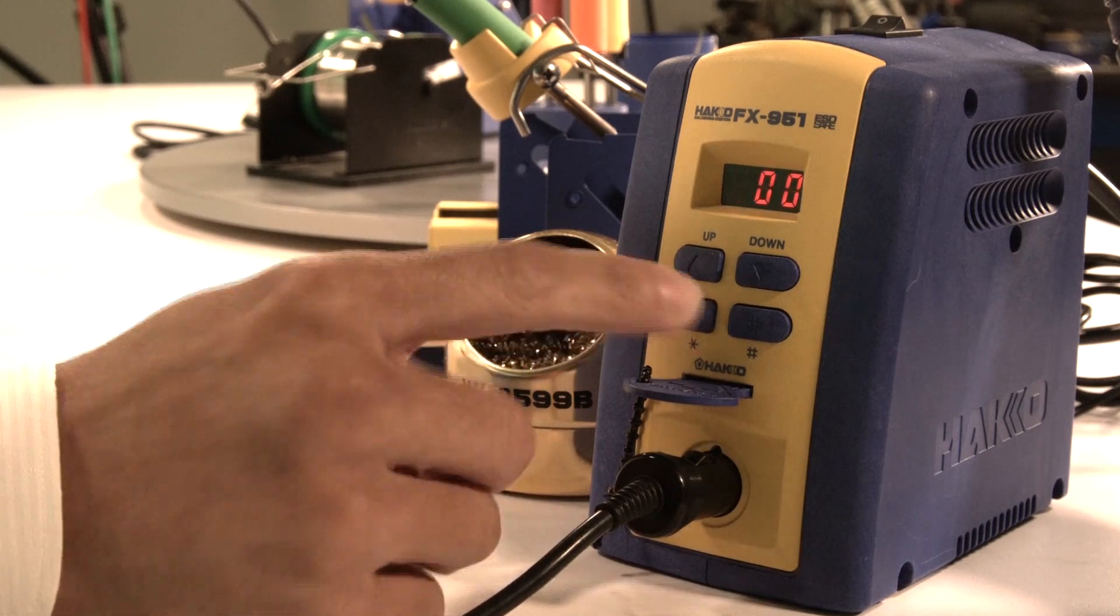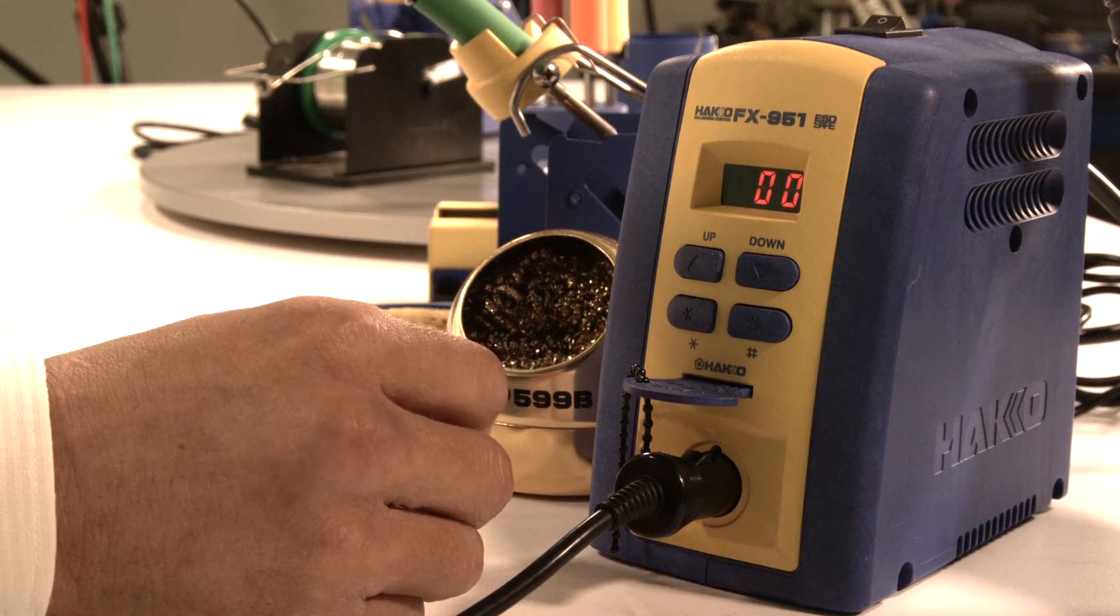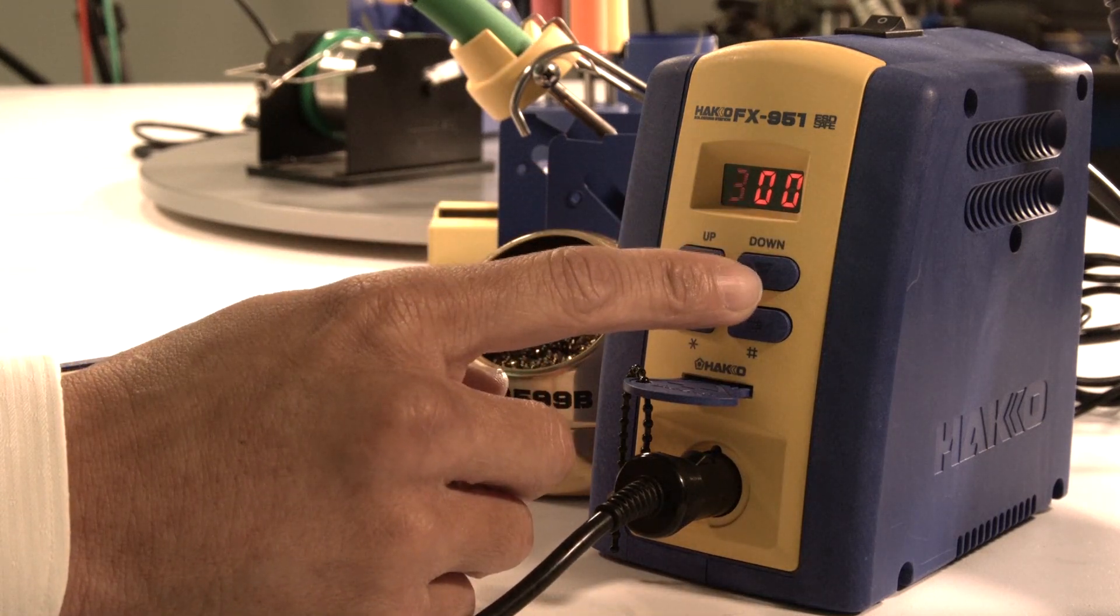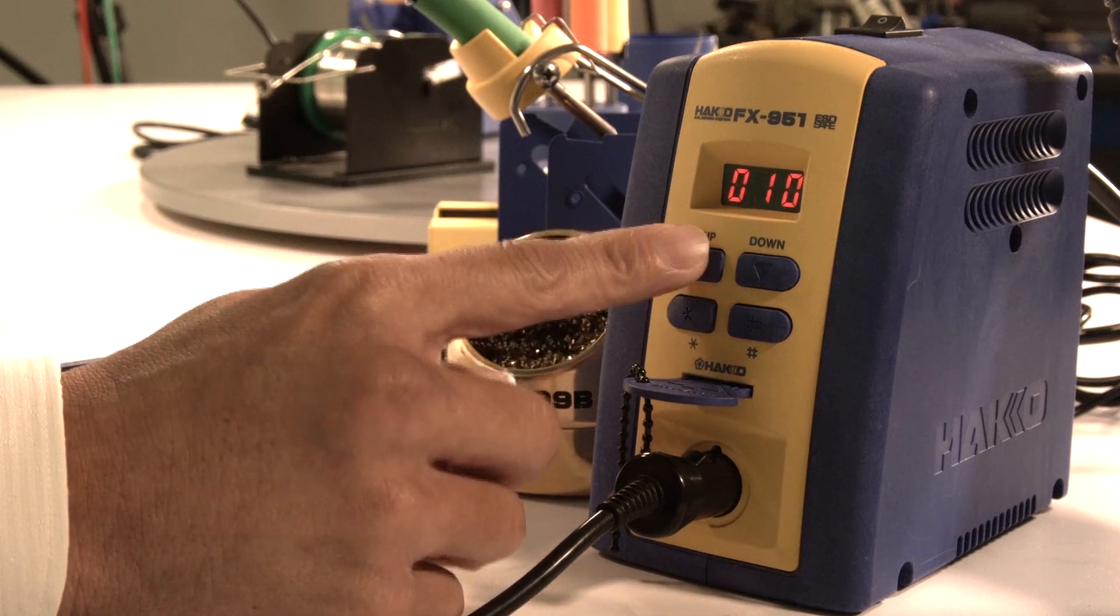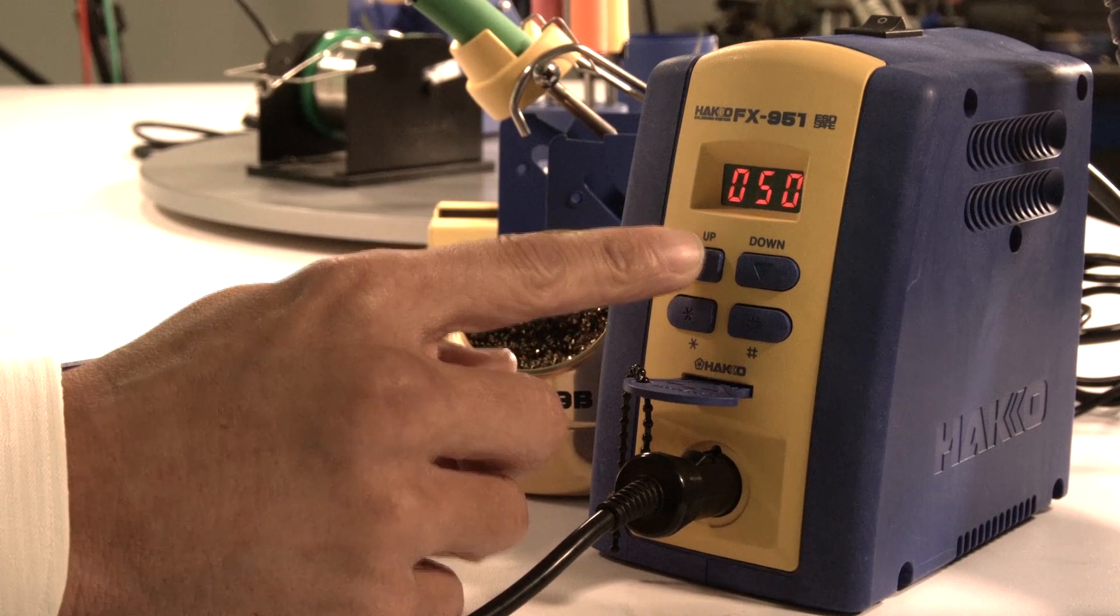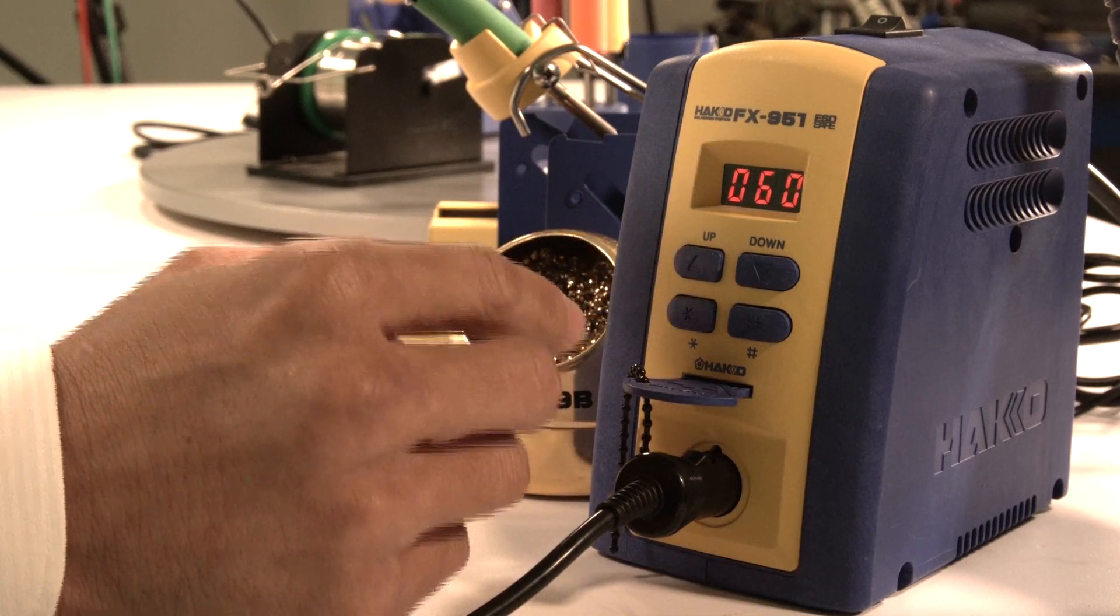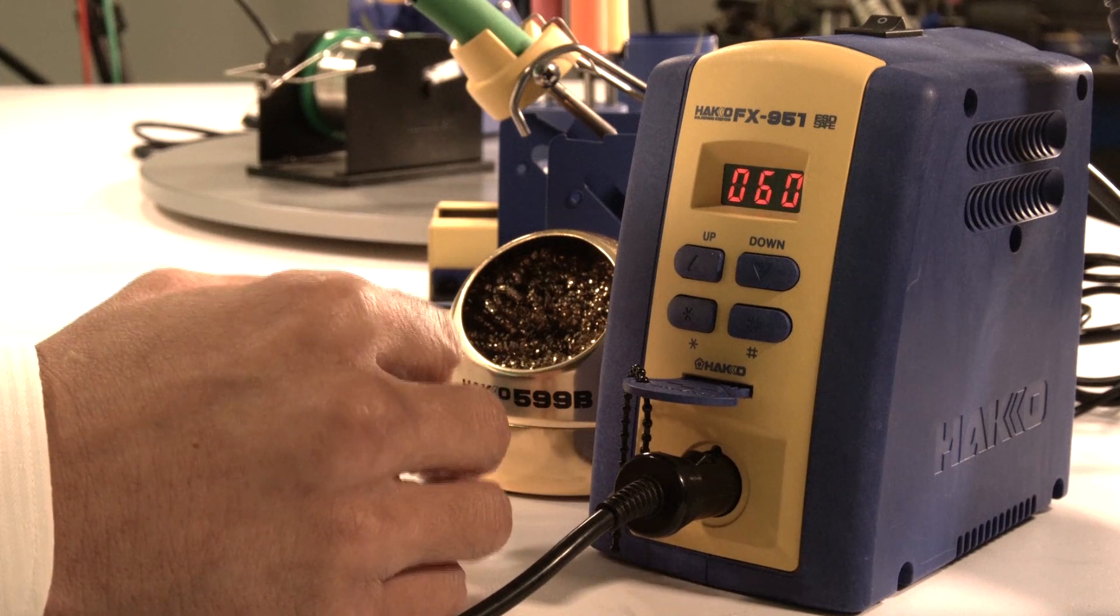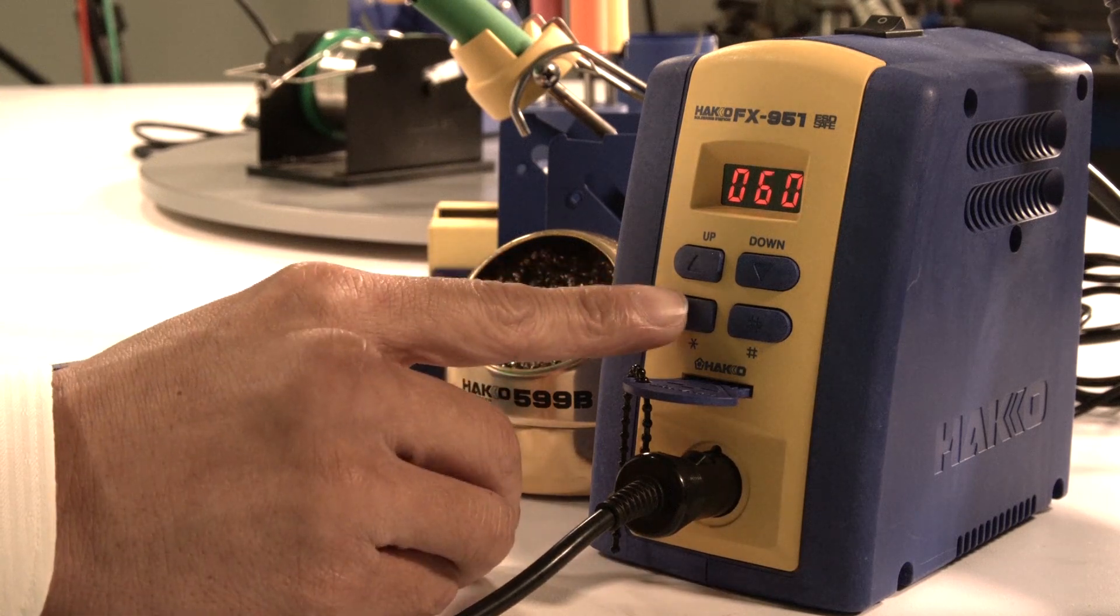Press the start button again to confirm. This is the low temperature error alarm setting. Right now it's at 300 degrees. That's too wide of a range, so I'm going to drop it down to 60, its minimum setting. That means 60°F—if the tip drops below that threshold, below your set temperature, there will be an alarm going off. So I confirm, confirm again.